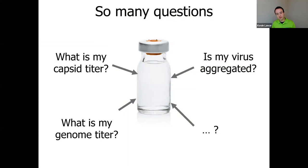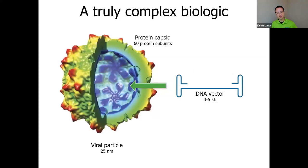When you're examining an AAV sample, you have a lot of questions: what's your capsid titer, what's your genome titer, has aggregation struck your sample, or even more complex things. What's more of an issue is that AAV itself is a truly complex biologic — not only a protein and DNA combined, but we also have structure to worry about, where the DNA needs to be inside of the capsid. Beyond that, we have to worry about quaternary structure and aggregation. So when you're characterizing a viral vector like this, you really need an advanced solution able to handle something as complex as AAV.